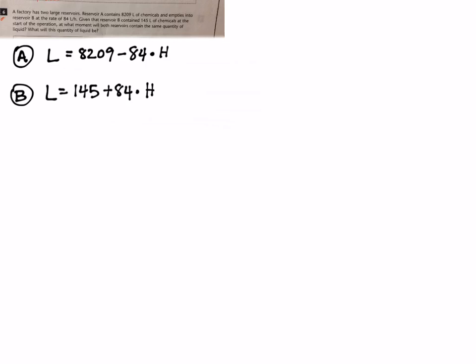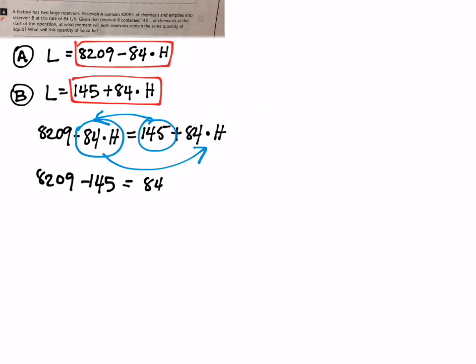For container B it's similar, liters equals, I start with 145 but this time I'm gaining 84 per hour so I do plus 84 times the number of hours. I make these two sides equal to each other. And so 8,209 minus 84H equals 145 plus 84H.